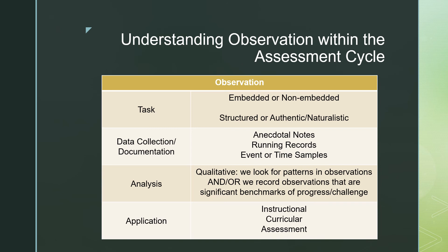There are three main data collection methods — or documentation, which is the preferred term in early childhood because it feels more holistic and whole-child, though documentation and data collection mean the same thing. The three big ones for observation are anecdotal notes, running records, and sampling strategies — specifically event samples and time samples. We'll discuss all three of them.